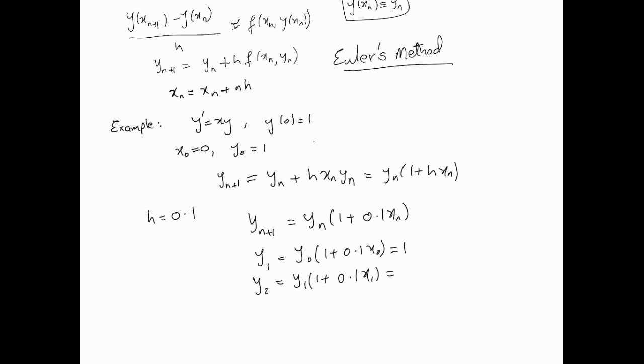We will generate our xn's. So x1 is equal to x0 + h, which is 0.1. x2 is equal to x0 + 0.1 times 2, so it's equal to 0.2. And so x3 is 0.3, similarly x4 is 0.4, and so on.